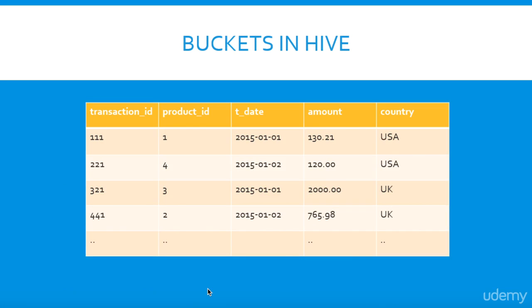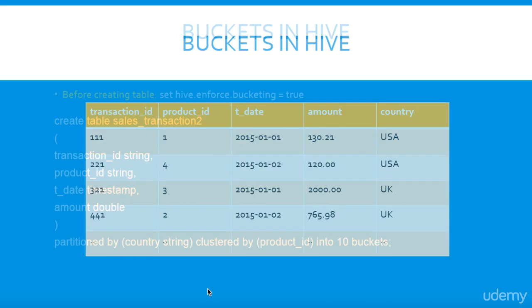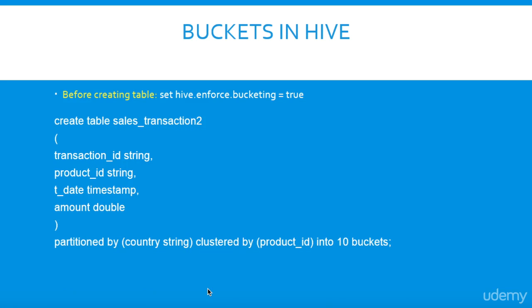Buckets in Hive. Partitions in Hive can be further subdivided into buckets. Bucketing is another approach to store data in more manageable parts. Looking at the sample data, I will create a table which will be partitioned based on country and clustered by product ID. Before creating a bucketed table in Hive, you will need to run the required set command. In Hive, each partition is created as a directory in HDFS whereas each bucket is created as a file. Hive buckets enable more efficient queries and can be used in query optimization techniques.